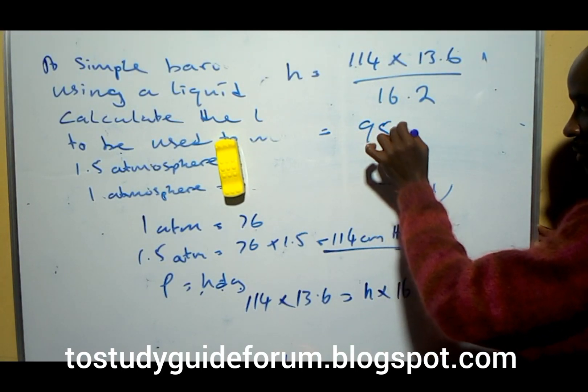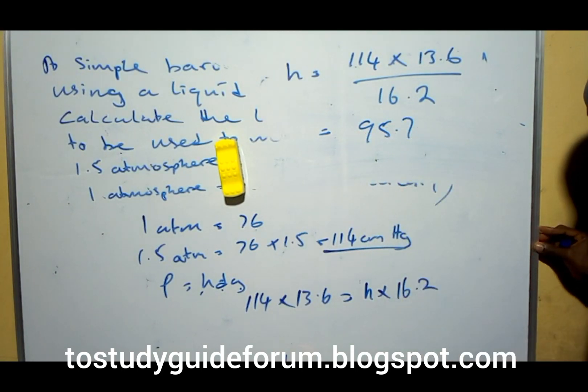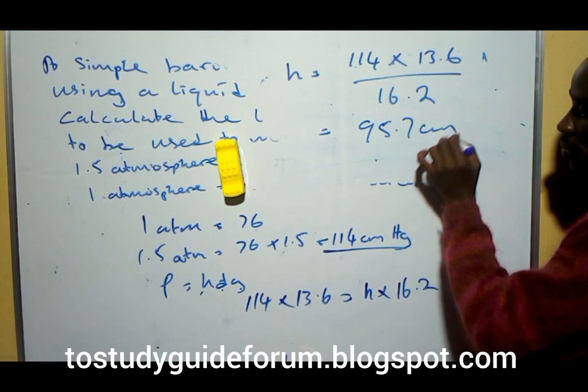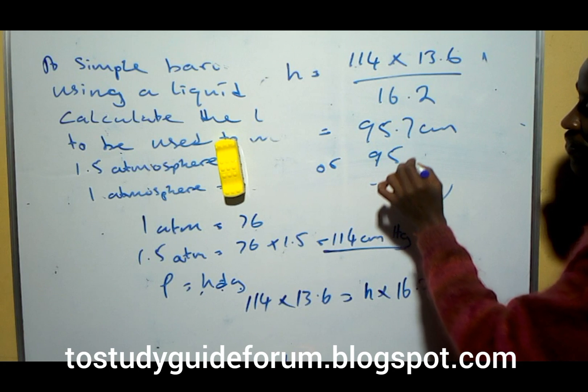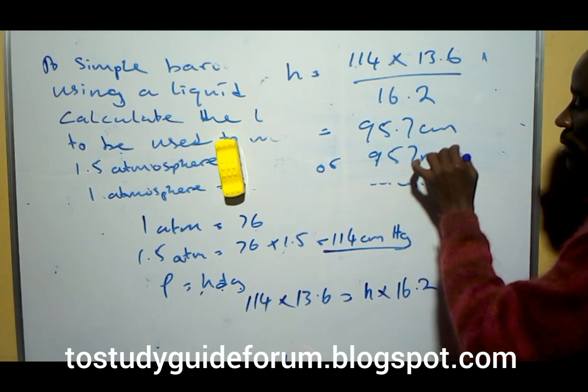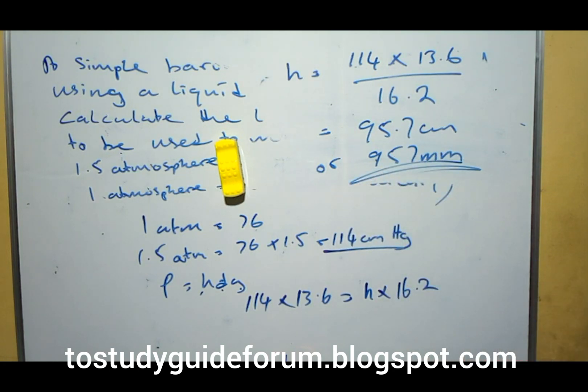So that will give us 95.7 cm³ or 95.7 mm, that is what we have.